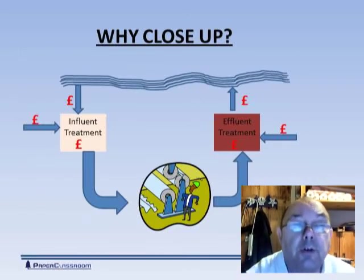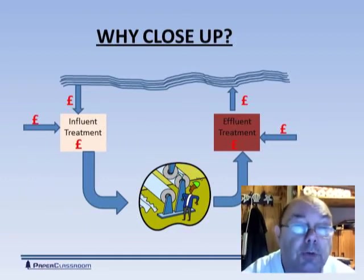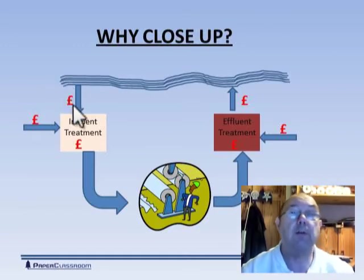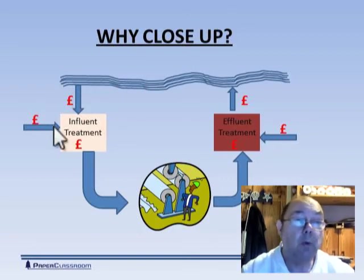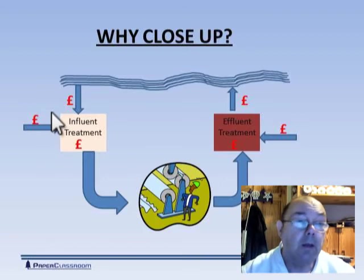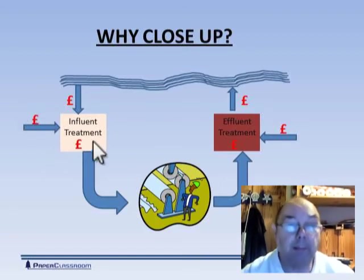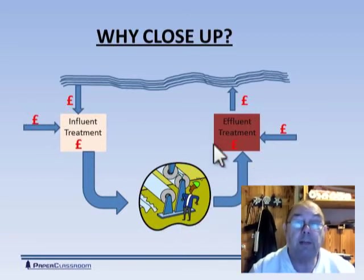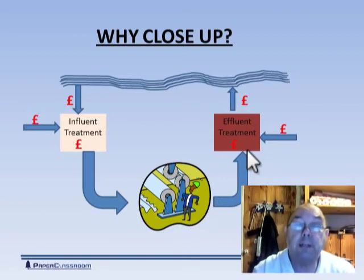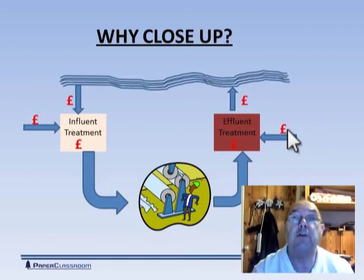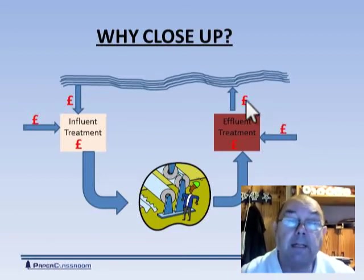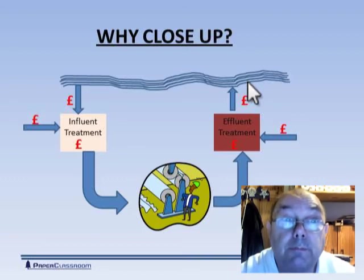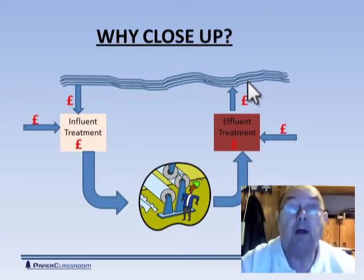Why is there a trend to closing up paper mill systems with regard to the water loops? Look at all those pound signs — we pay money to extract water from a river, we pay money to build a plant to clean it up, we have everyday running costs to run that plant, and then we use it. Having used the water, we've then got another capital expenditure cost to build a plant to treat the effluent, and we then have the everyday running costs of running that plant. Finally, we pay to put the water back into the river in a far cleaner state than when we took it out. So that's one reason for cleaning up the effluent and reusing the water.